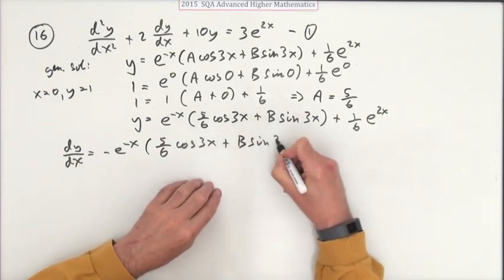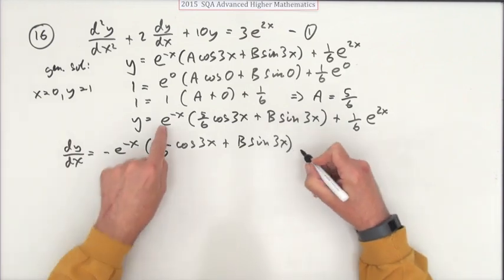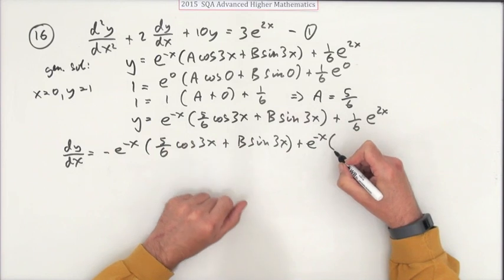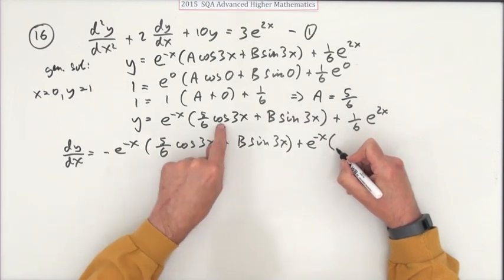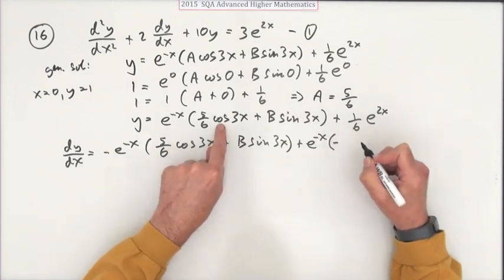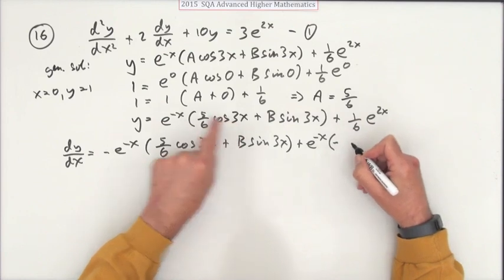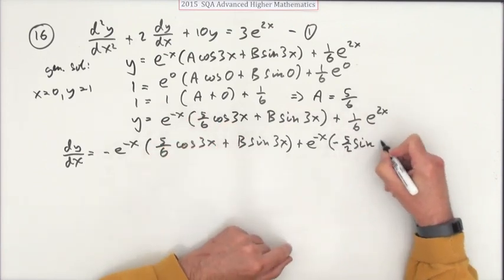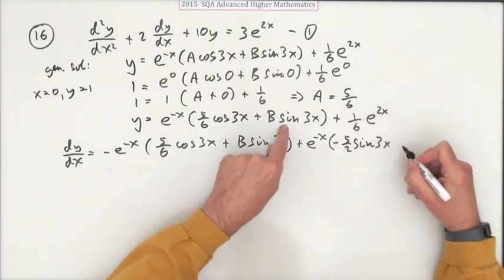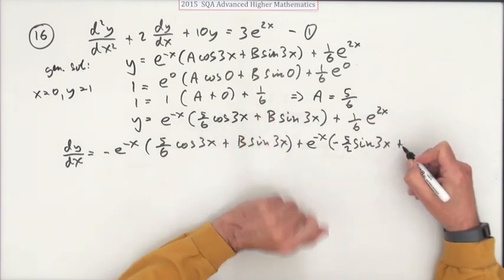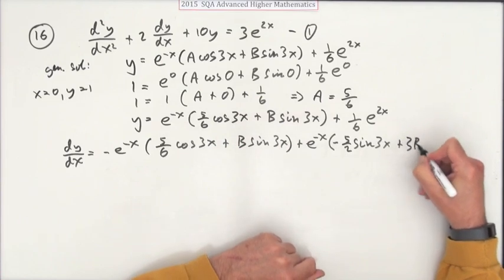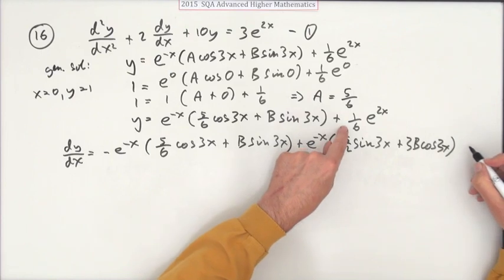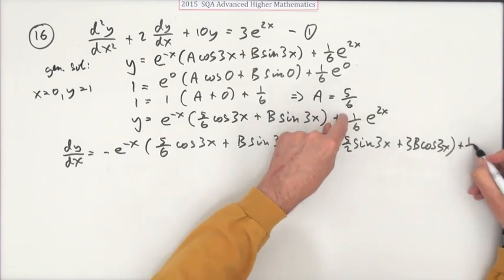Leave this one alone though, so 5/6 of cos 3x, and I don't know what B is yet, B sin 3x. Now leave that alone, e^(-x), and differentiate this. And this is what becomes a bit more of a problem. So cos is going to go to negative sine, so it'll be negative, and also multiply by the 3, which will make that a 5/2 sin 3x. This one will go to cos but stay positive, and it'll be 3B cos 3x. Just making it. And then finally that would be 2 times that's one third.